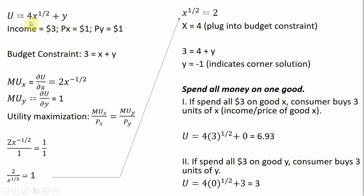So here's a utility function, and consumer has income of $3, price of good X is $1, price of good Y is $1.